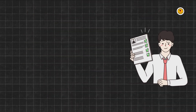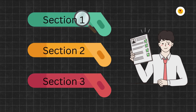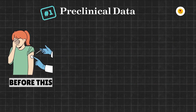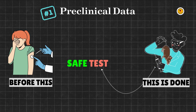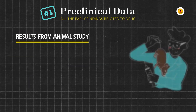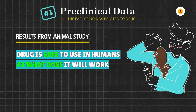Let's dive into the main sections of the New Drug Application that the FDA looks at before making an approval decision for any drug. The first section is Preclinical Data. Before testing any new drug on humans, that drug is first tested on animals to check if it is even safe to consider for testing in humans. This part of the NDA includes all the early findings related to the drug, like results from animal studies showing whether the drug is safe and at what doses it might work in humans.